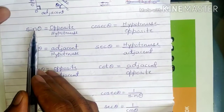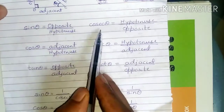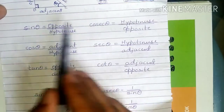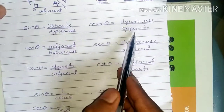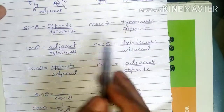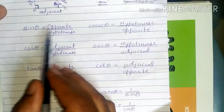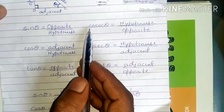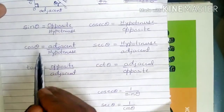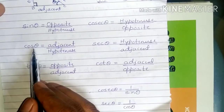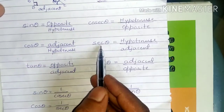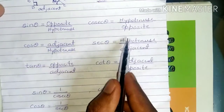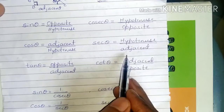The reciprocal of sin theta is cosec theta — that means opposite by hypotenuse flipped gives hypotenuse by opposite. In the same way, the reciprocal of cos theta is sec theta: adjacent by hypotenuse becomes hypotenuse by adjacent.